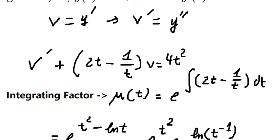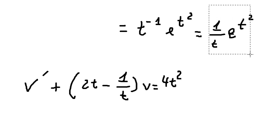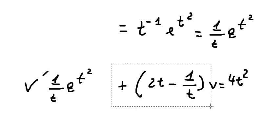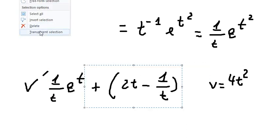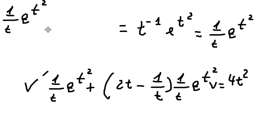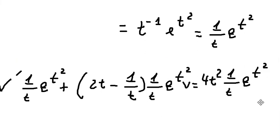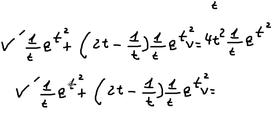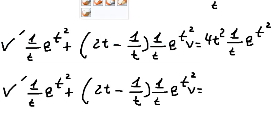Now we go back. We have the integrating factor, which means we need to multiply both sides by 1 over t times e to the power of t squared. After simplifying, the right-hand side becomes 4t times e to the power of t squared.